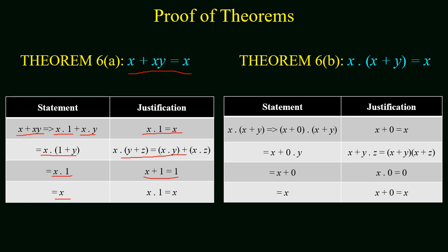Now we prove the dual part: x · (x + y) = x. Starting with x · (x + y), we add 0 to x, giving (x + 0) · (x + y). Applying distributive law gives x + 0 · y. Since any variable multiplied by 0 equals 0, we get x + 0 = x. Both statements of the absorption theorem are thus proved.